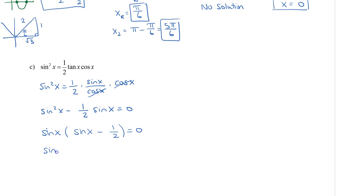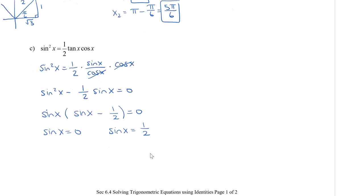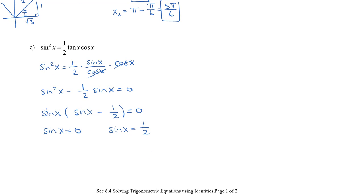So now I have two factors. So I have sine x equals to 0 and I also have sine x equals to a half. So solving each of these independently. So I'm going to draw my graph and I need the graph to solve the sine x equals 0. And this occurs at 0 and also at π. So this is x is 0 and π.